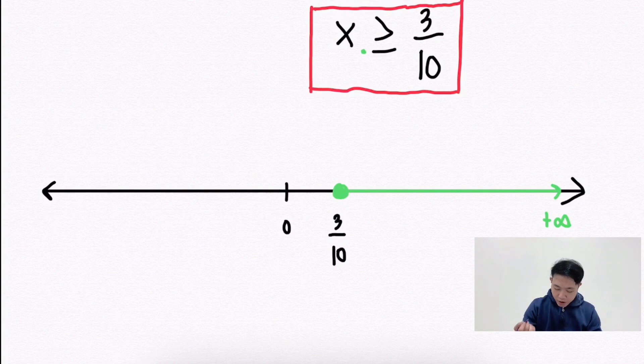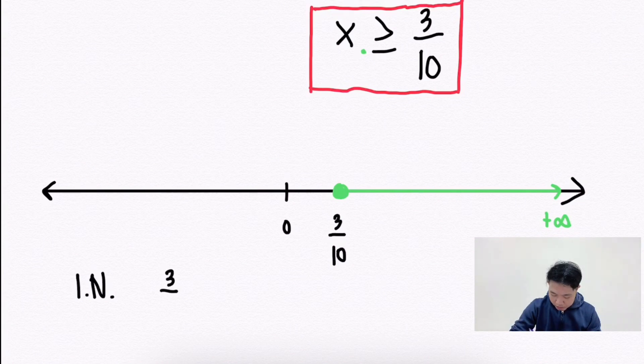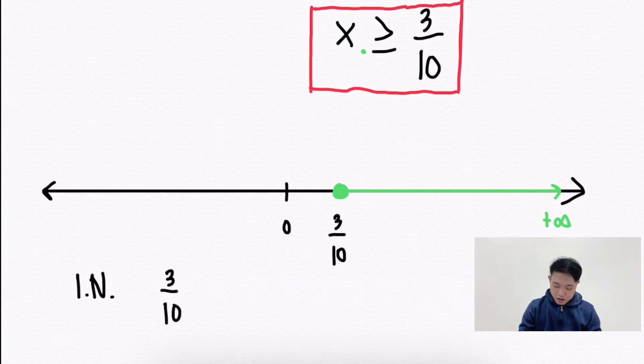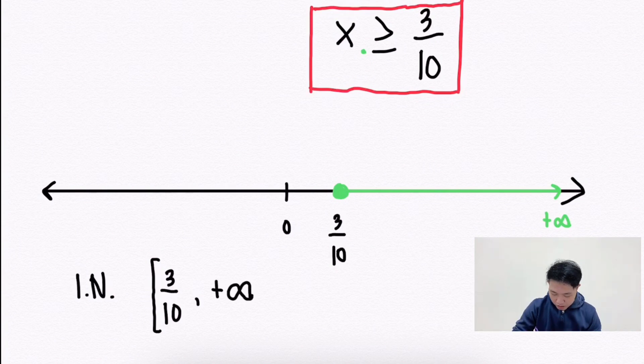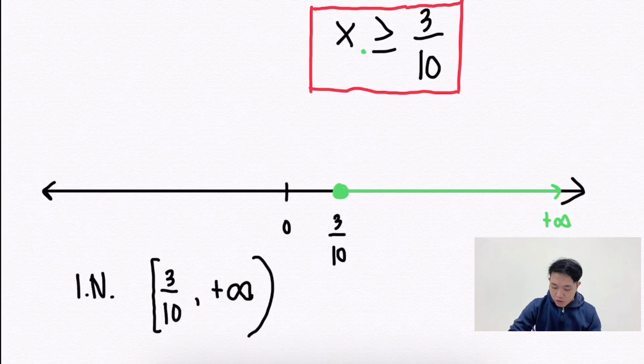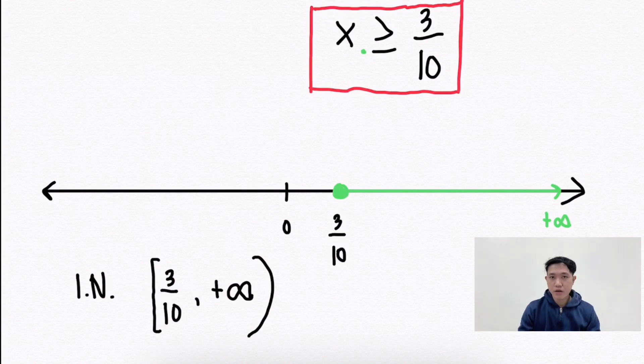Lastly, let's find the interval notation. First copy 3 over 10 or positive 3 over 10. We use square bracket. Why? Because 3 over 10 is included in the solution set. So this is the final answer or the interval notation.